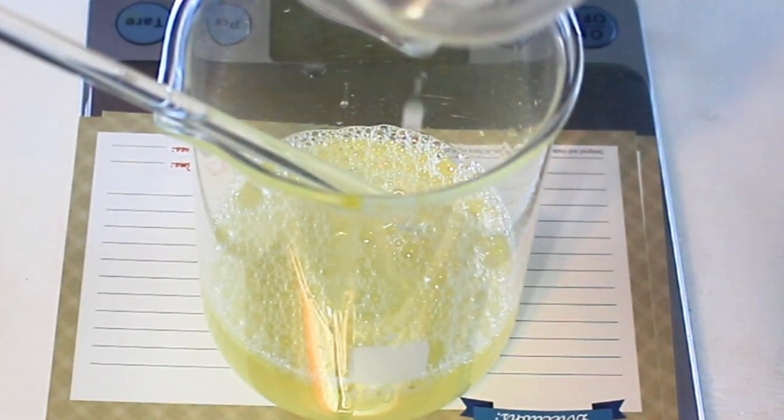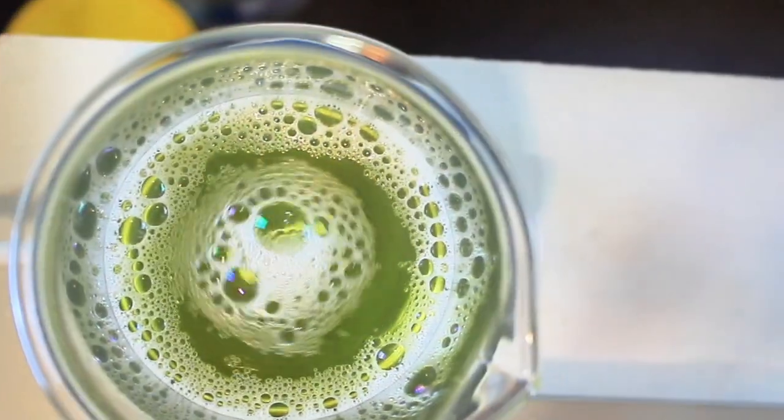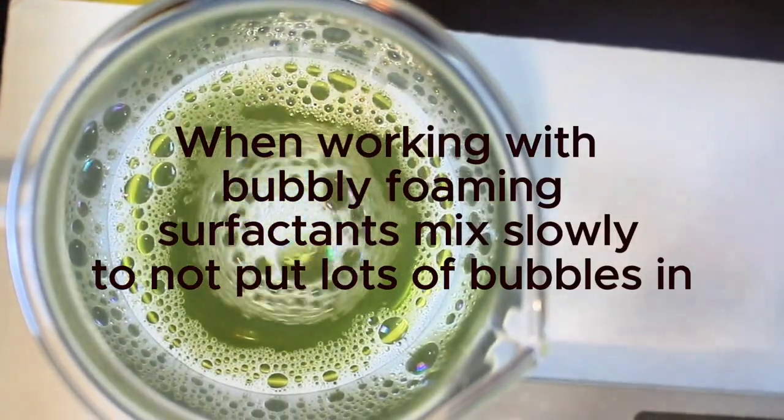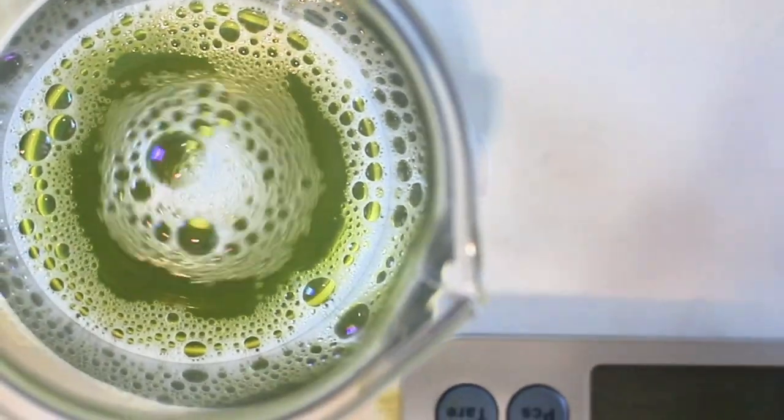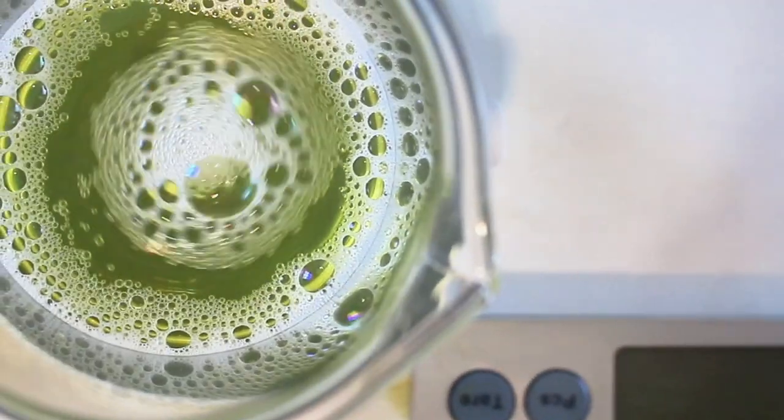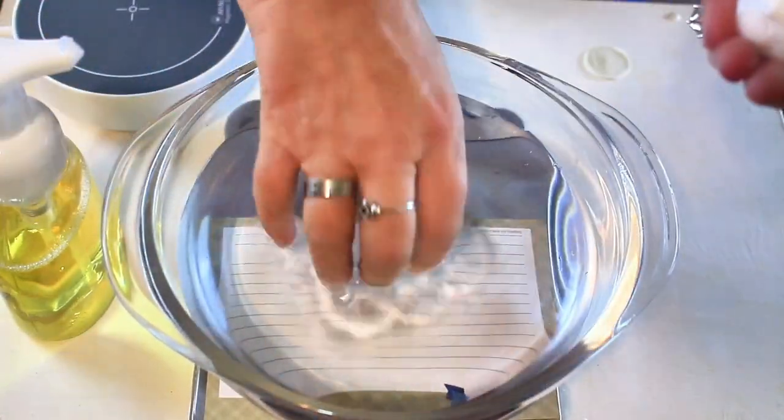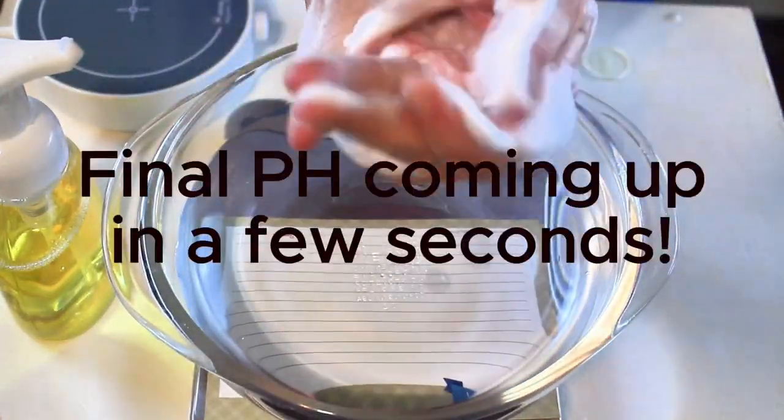And now I'm just going to stir in the xanthan gum. I did have to put this on the magnetic stirrer for about 10 minutes to incorporate everything, and it came out just beautiful. You'll see me here—I'm showing you a test of the lather and the rinse-off. This is just a really nice hand wash.